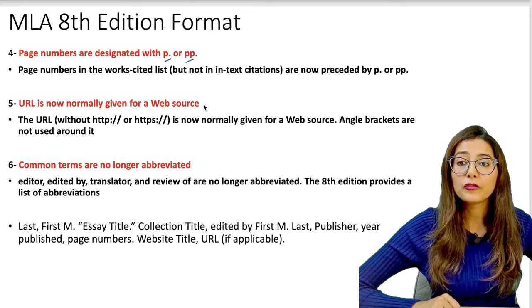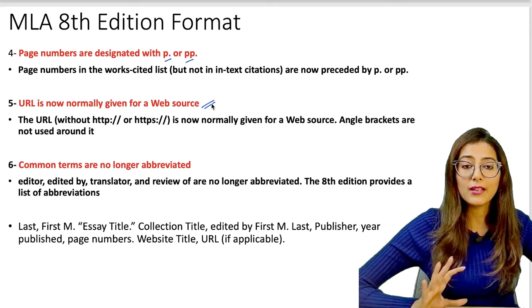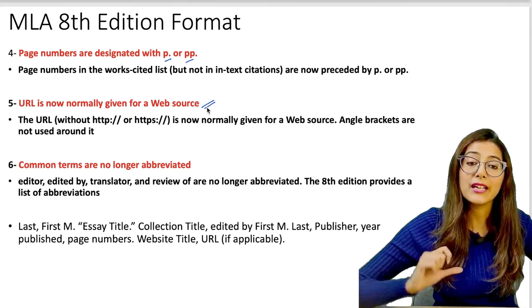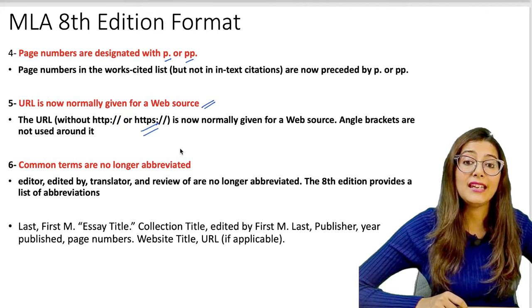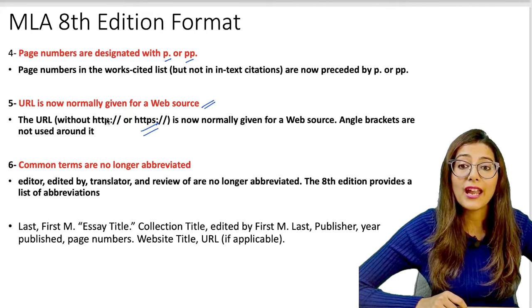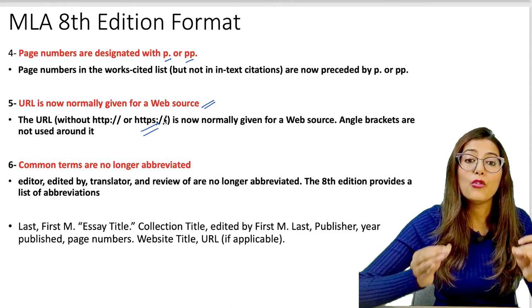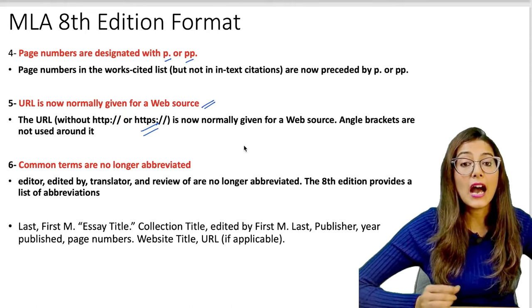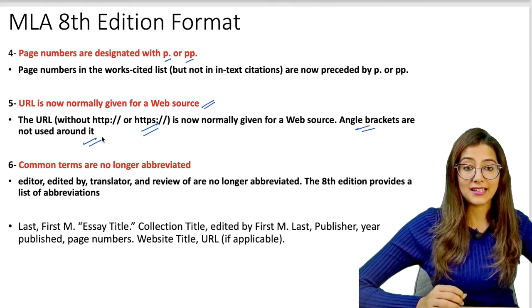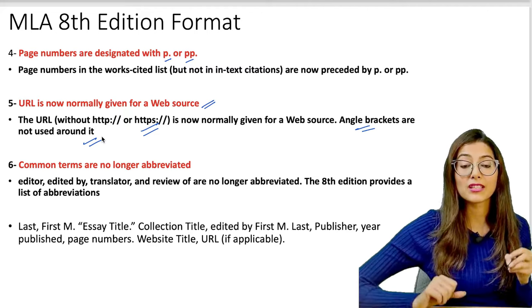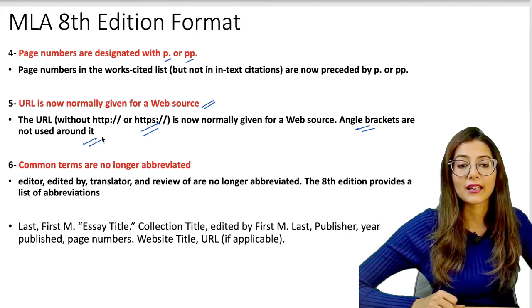The fifth point: URL is now normally given for a web source. If you have a website, you write the name of the website URL, but without HTTP — you do not write the HTTP prefix. Angle brackets are also not used around URLs. So HTTP is excluded and angle brackets are not required.